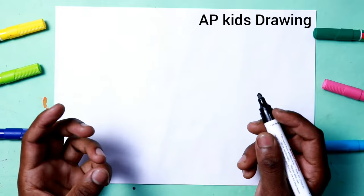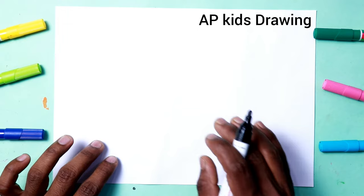Hello children, myself a paper top and you are watching AP Kids Drawing. Today we are drawing a butterfly from letter B, step by step. Firstly we write B on this paper. Let's draw.